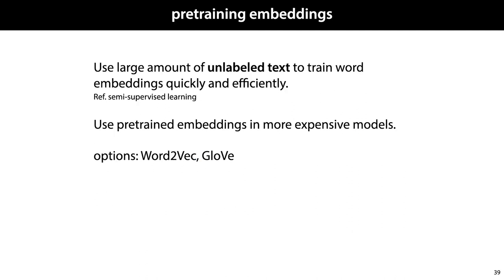In addition to training embeddings together with the other parameters of our model, embeddings also provide a good opportunity for pre-training. If we have a large amount of unlabeled text available, and we can think of a cheap way to use it to train word embeddings, we can then reuse these word embeddings in larger, more elaborate models. We'll take a quick look at the word2vec model as an example.